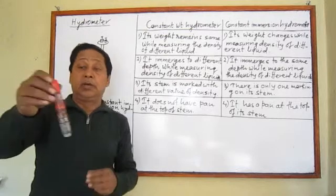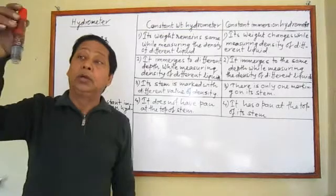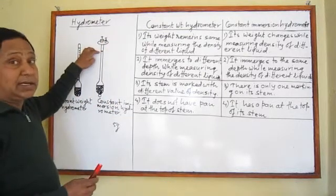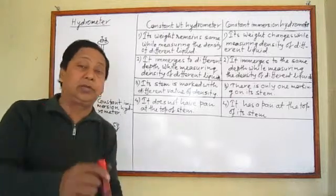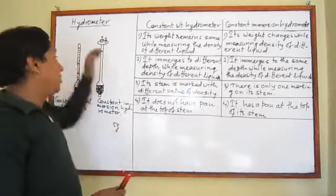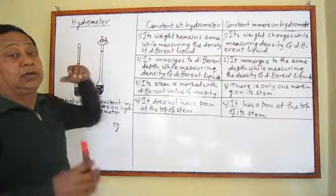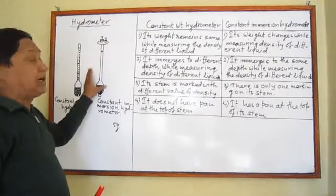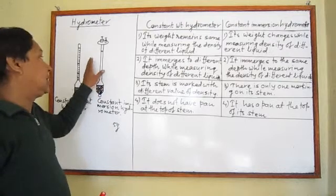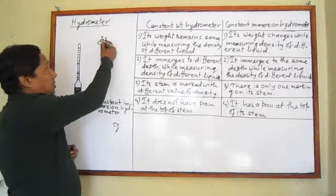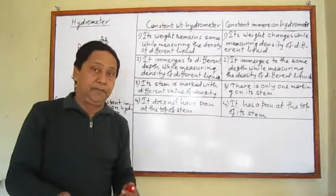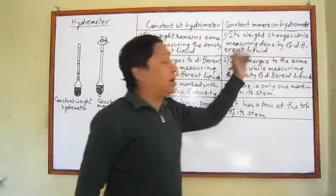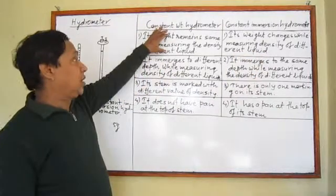In the case of the constant immersion hydrometer, for each different liquid you must first place it in distilled water with certain standard masses, then use a different standard mass for each new liquid to immerse it to the marking. So the effective weight of the hydrometer changes while measuring the density of different liquids, whereas in the constant weight hydrometer the weight remains the same.